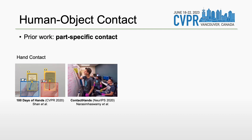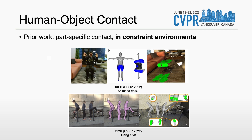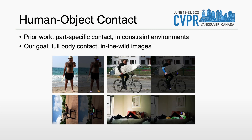Prior work exists for detecting part-specific contact — for example, hand-object contact or foot-ground contact. Other works estimate contact only in constrained environments with limited generalization. What we need instead is a contact detector for the entire body that estimates detailed, body-part-related contact maps in arbitrary images.